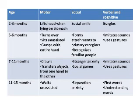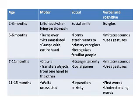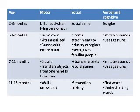Here is an outline of the most important milestones a baby goes through in their development. From two to three months old, they lift their heads when lying on the stomach. They have what's called the social smile, but that's actually a reflex — they're not really smiling at people intentionally. A two- to three-month-old baby just gurgles; you're not expecting the baby to speak at that stage.